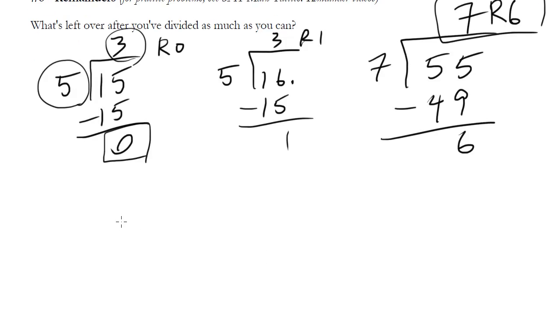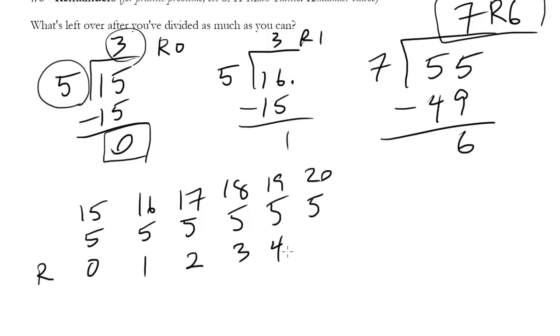Notice if I have 5 into 15, we said the remainder was 0. 5 into 16, we said the remainder was 1. 5 into 17, well that's just going to leave 2. 5 into 18 is going to leave a remainder of 3. It's going to go in 3 times, leave 3. 5 into 19 is going to leave 4. 5 into 20, however, is going to go in equally 4 times, leaving a remainder of 0.